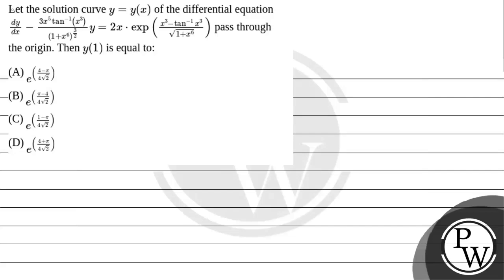Hello bachon. In this question it is given that: let the solution curve y = y(x) of the differential equation dy/dx minus (3x⁵ · tan⁻¹(x³) · y) / (1 + x⁶)^(3/2) equals 2 · exp(x³ - tan⁻¹(x³)) · ∛(1 + x⁶), pass through the origin. Then y(1) equals.